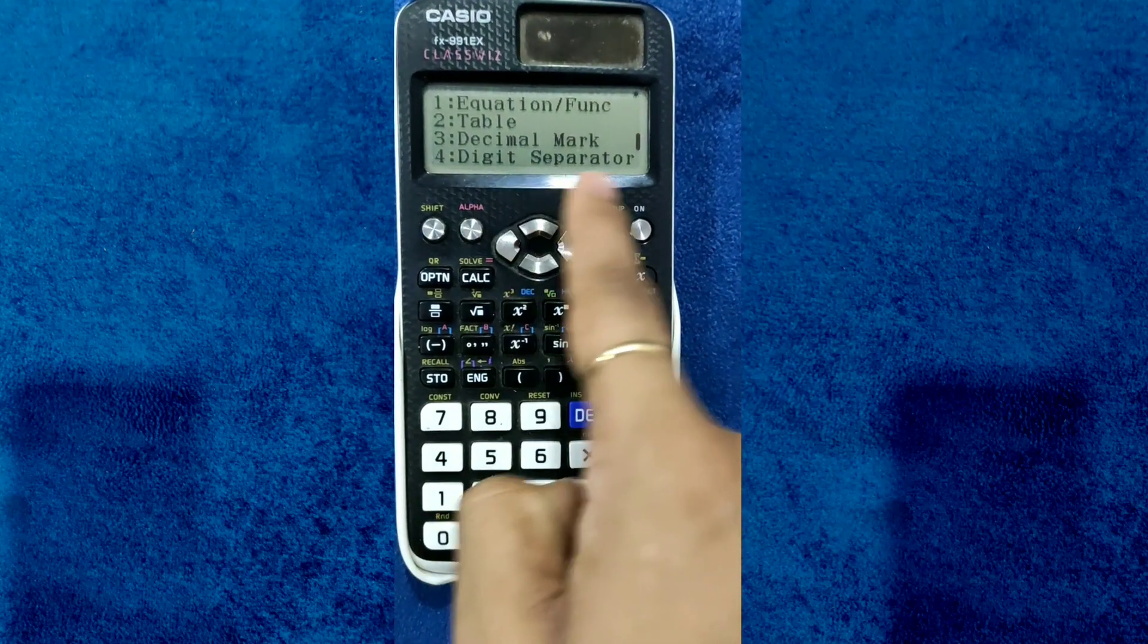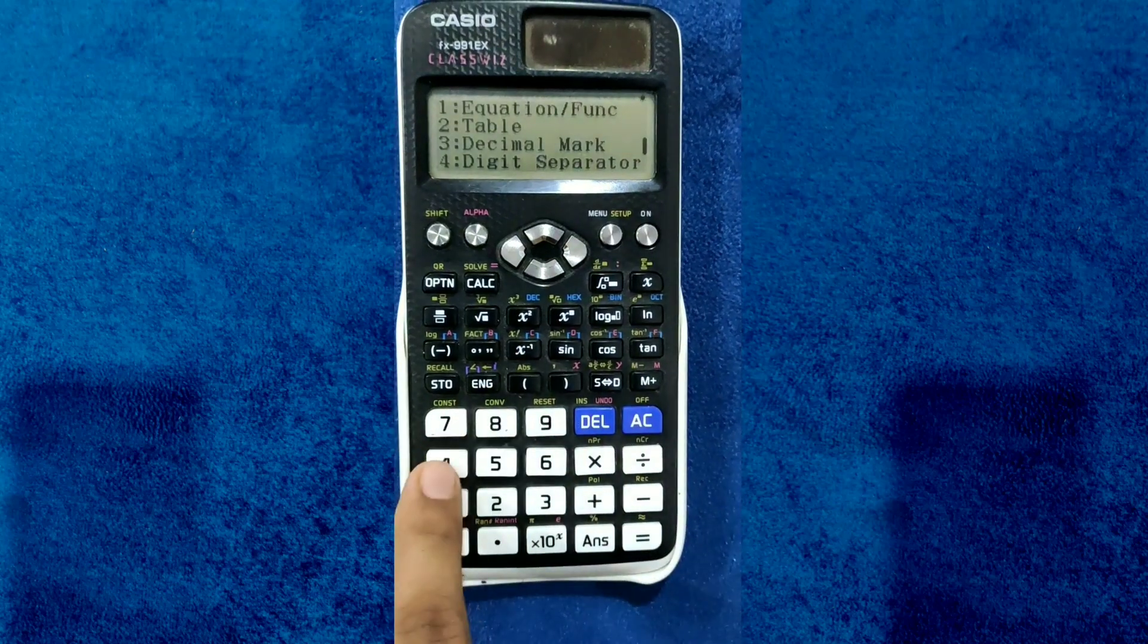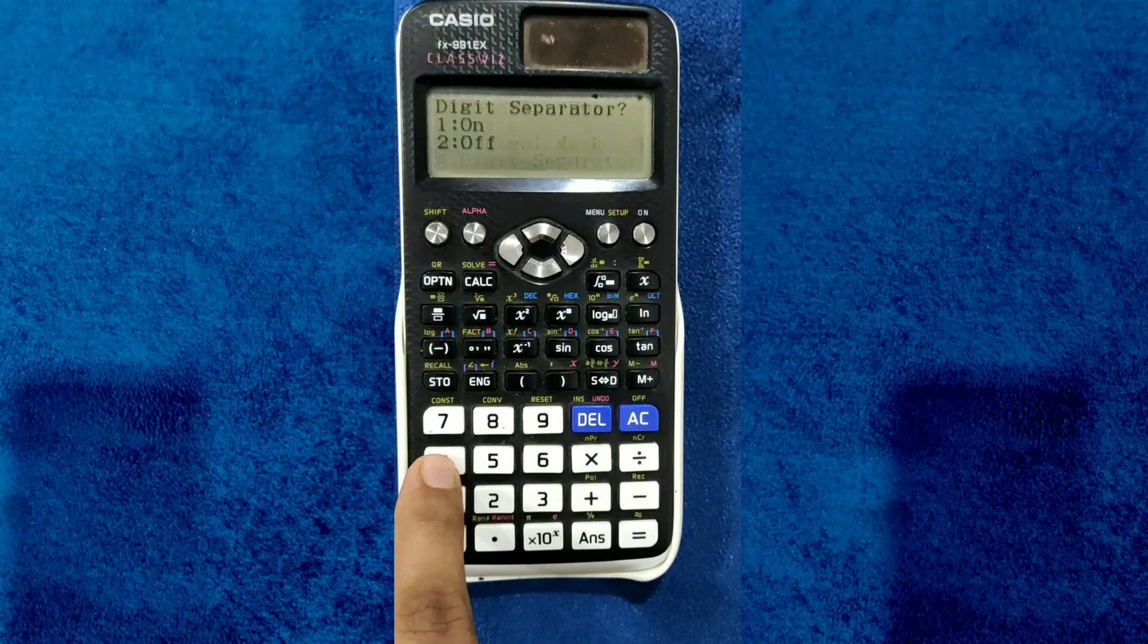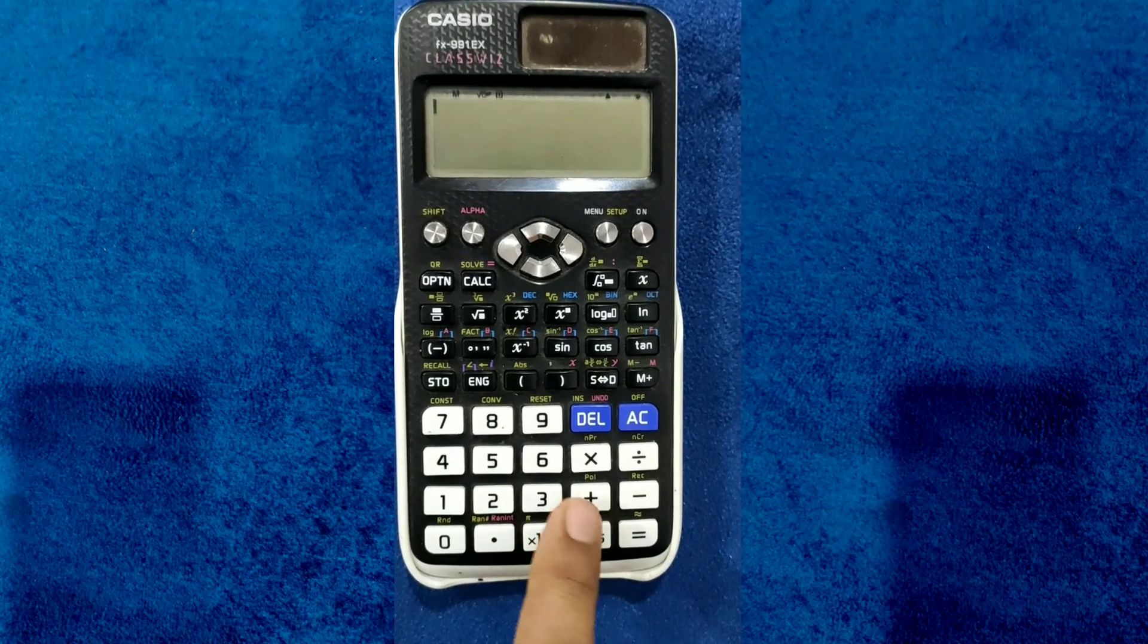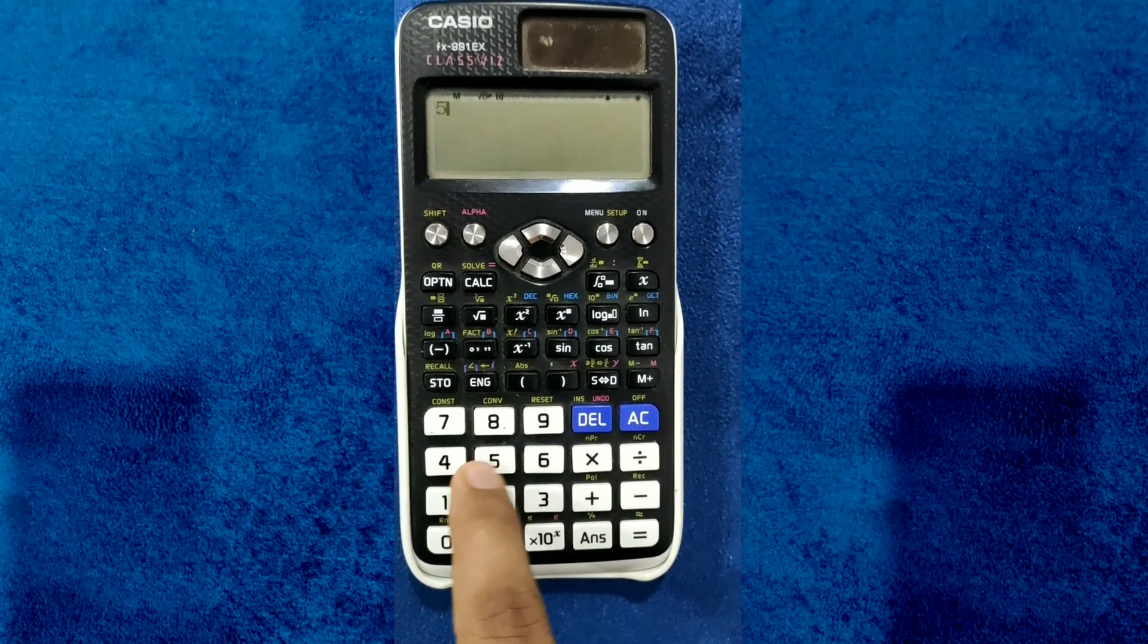You can see the last option as Digit Separator. Click on that option by pressing 4. First, I will turn it off. Press 2. Now let's see again with the same example.